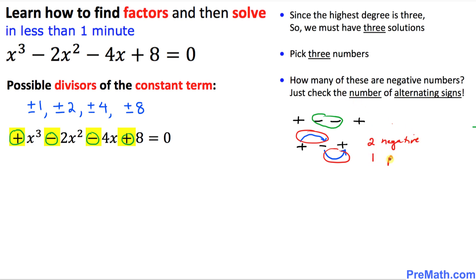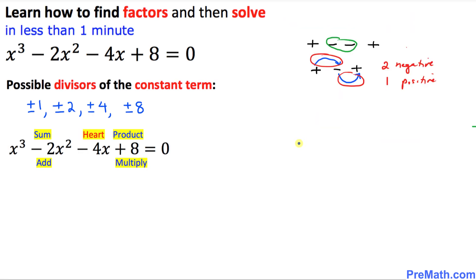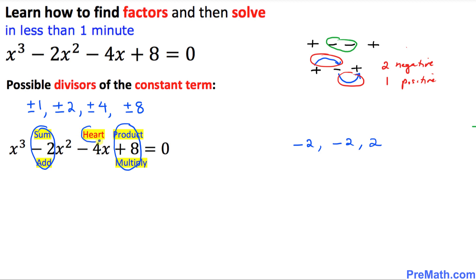That means 1 of the 3 numbers is positive. The appropriate numbers are negative 2, negative 2, and positive 2. Two of them are negative and one is positive. If we add these three numbers, they add up to negative 2, which is correct. And if we multiply them, the product is positive 8.